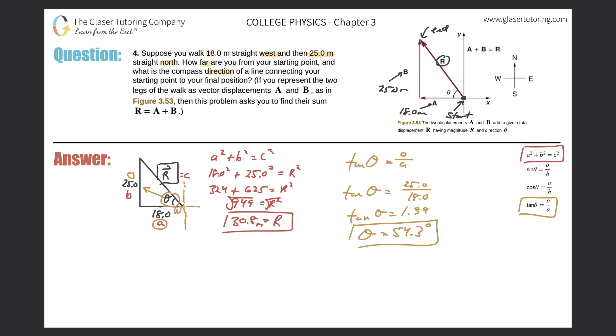Cool. So then I can say, well, in order for me to describe this angle fully, I would have to say that this angle measure is 54.3 degrees north, because it's above west—north of west. That would fully describe it.